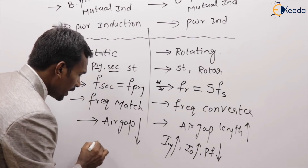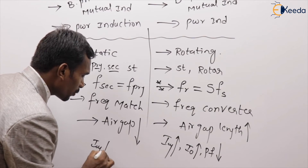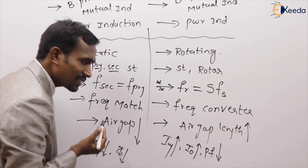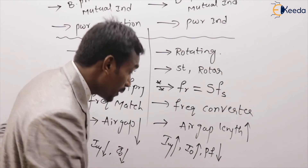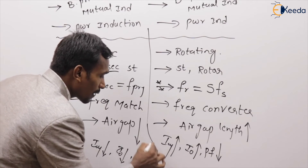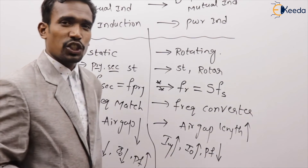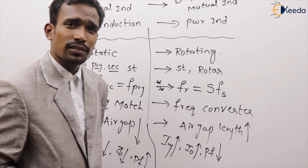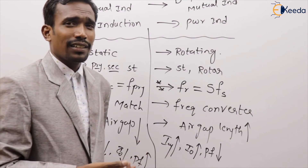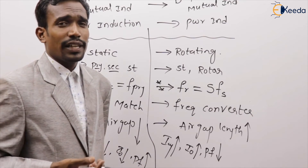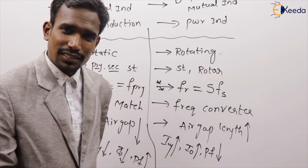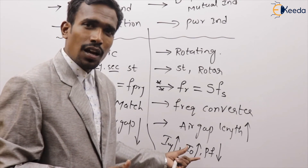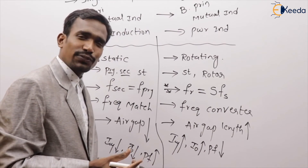The no-load power factor is less in the induction machine and more in the transformer. The typical no-load power factor of the induction machine is around 0.18 to 0.2 lagging, whereas the transformer's no-load power factor is 0.22 to 0.25 lagging. The reason the transformer has a higher power factor is its smaller air gap.